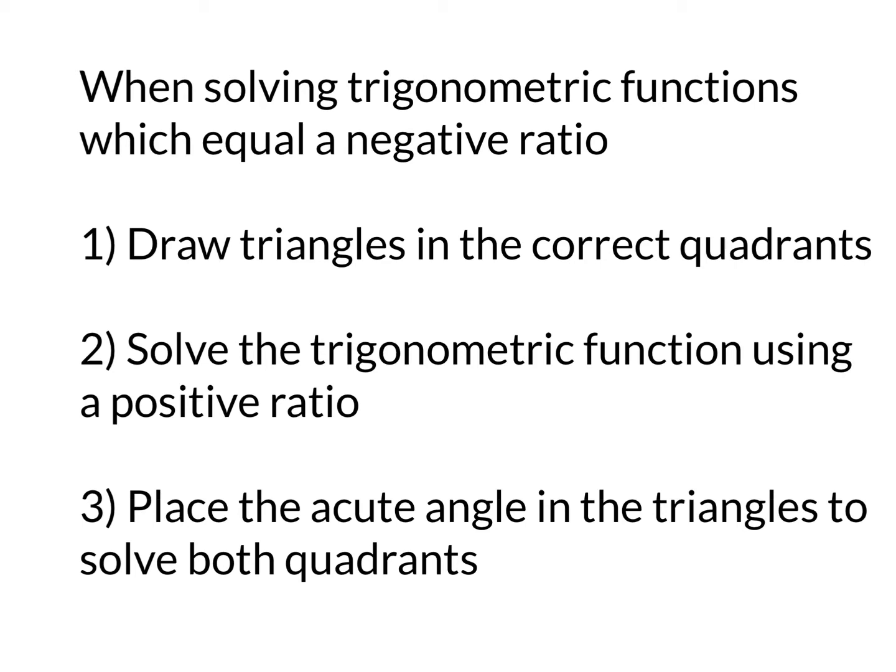The first thing is, you draw the triangles in the correct quadrants where the negative ratios are. You then solve the trig function using a positive ratio, and we do this because it creates an acute angle that we can put into the triangles.